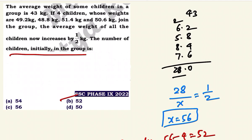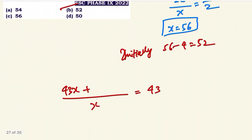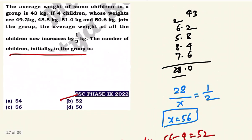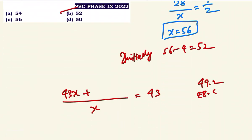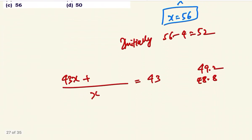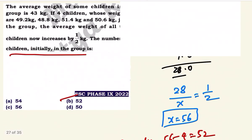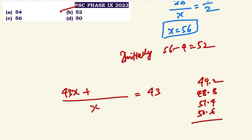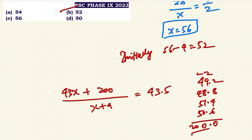Checking: 49.2, 48.8, 51.4, 50.6 — their sum is 200, average is 50. So average of 4 children is 50.1... approximately 50. Average increases: 43.5 — so total 20x. Setting up the equation gives the initial count.